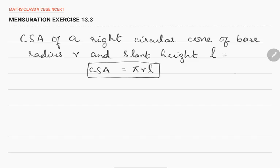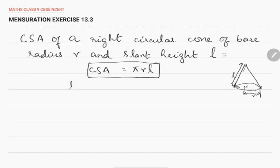Here R is the radius and L is the slant height of the cone. Now we are going to find the value of L. The value of L can be found by the formula: square root of R squared plus H squared. This distance is H. So L is equal to square root of R squared plus H squared, and using this value of L we can find the curved surface area using the formula pi into R into L.